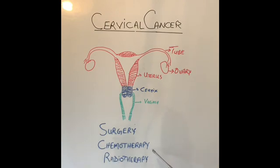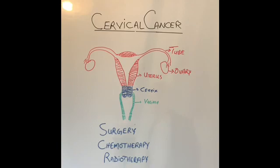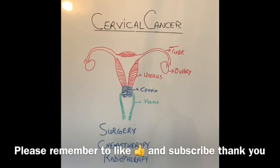If the cancer is very advanced and has gone to other parts of the body like the lungs, liver, and bones, and the patient is not fit for surgery or chemoradiotherapy, then palliative treatment such as pain control and other support will be necessary, which in the United Kingdom is usually given under the supervision of Macmillan nurses. I hope you found this video informative. If you did, please remember to like and subscribe to my channel. Until next time, I'll see you very soon. Take care.